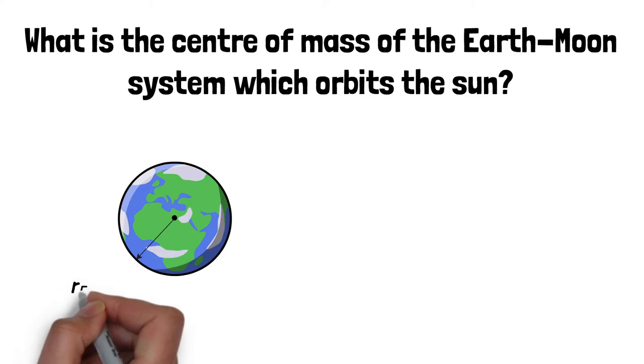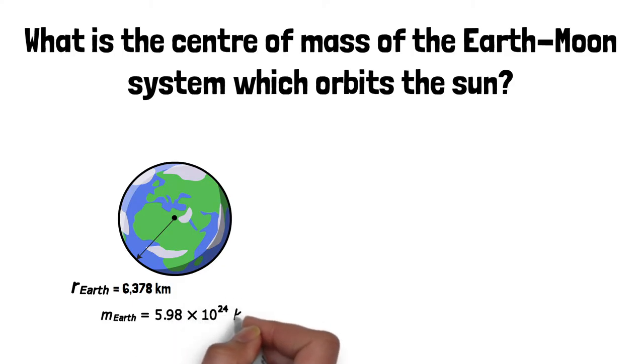The Earth shown here has an average radius of 6,378 kilometers, and a total mass of 5.98 times 10 to the power of 24 kilograms.